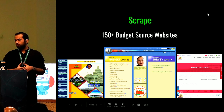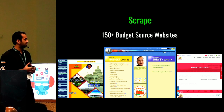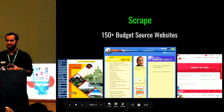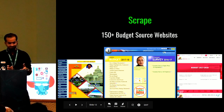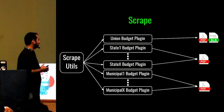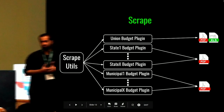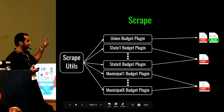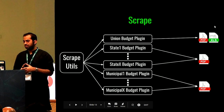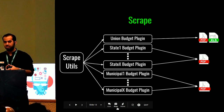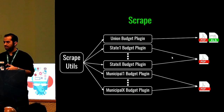Let's focus on the scrape component. There are around 150 budget websites giving us information on government priorities. Each one follows a different template, meaning each has a different HTML structure. So we developed a utility — a centralized scheme of functions and methods for scraping, called scraping utils. With it you can download a file, do session management, cookie management, XPath selection, and so on.